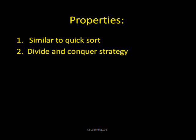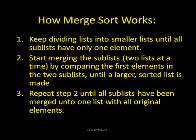How merge sort works is that it's going to keep dividing the list into smaller lists until all the sublists only have one element. Then you start merging the sublists two lists at a time by comparing the first element in each list, until you combine them both into a larger sorted list.